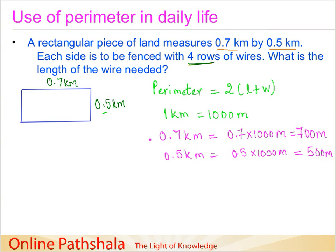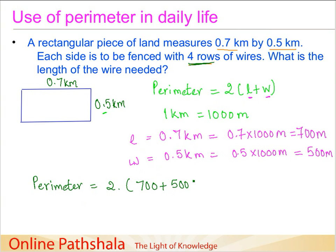Now we have our length L = 700 meters and width W = 500 meters. We can plug these values into the formula. The perimeter equals 2 times length plus width, which is 2 times (700 + 500). Since 700 plus 500 is 1200, we have 2 times 1200 meters, which equals 2400 meters.